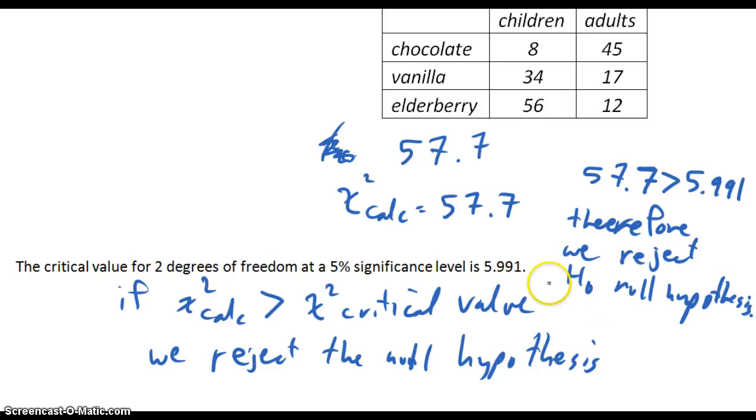And we can accept H sub 1, which is the alternative hypothesis.